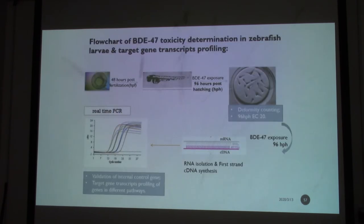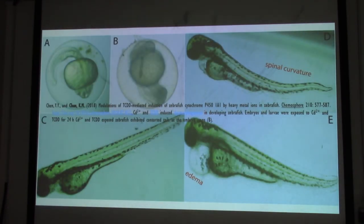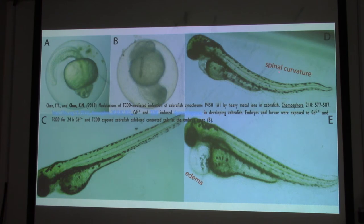In our study, we have embryo and larvae. We expose larvae to different chemicals and count for deformity. After counting the phenotypic effects, we collect RNA, do cDNA, and real-time PCR to study gene transcriptions of biomarker genes. For example, on dioxin: we compared the control with cadmium and dioxin added together. If you add them alone you do not see this effect, but if you add them together, you can see a truncated tail, spinal curvature, and edema. These morphogenesis findings are observed in zebrafish larvae.